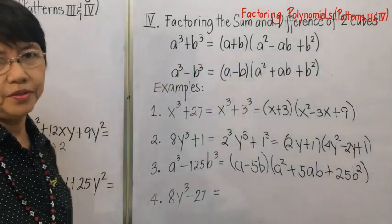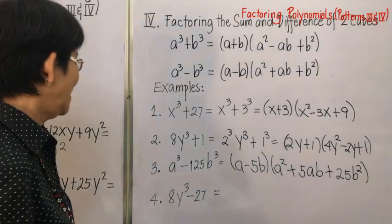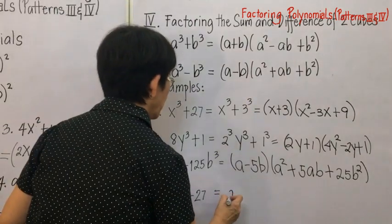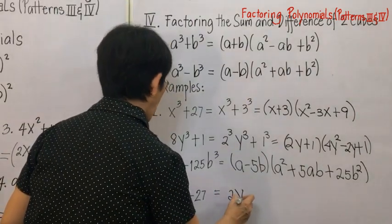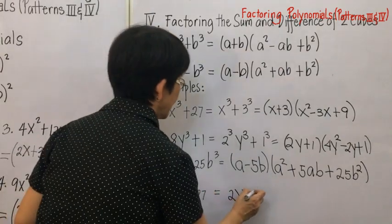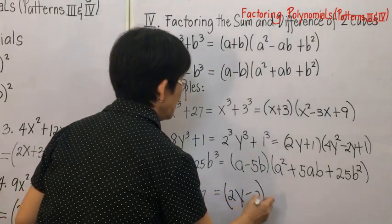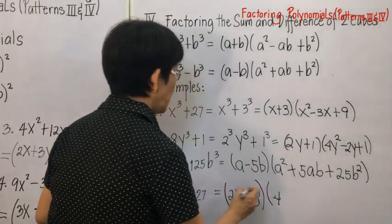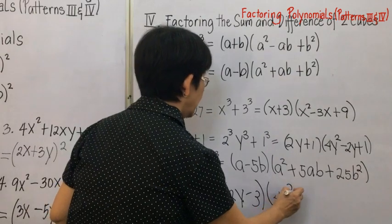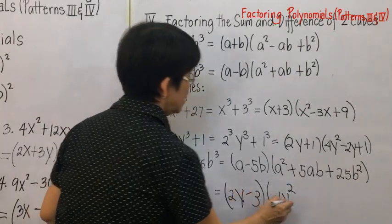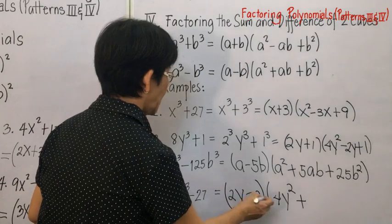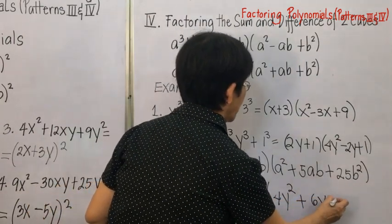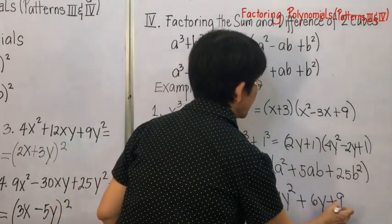Lastly, get the cube root of 8y cubed, which is 2y, minus the cube root of 27, which is 3. First factor: 2y minus 3. Second factor: square 2y to get 4y squared, then opposite sign gives plus, multiply 2y and 3 to get 6y, then square 3 to get plus 9. Answer: 2y minus 3, times 4y squared plus 6y plus 9.